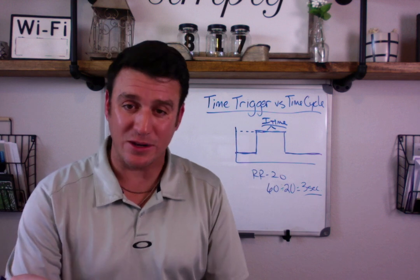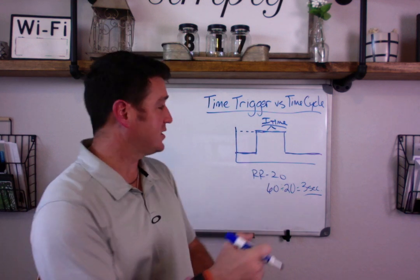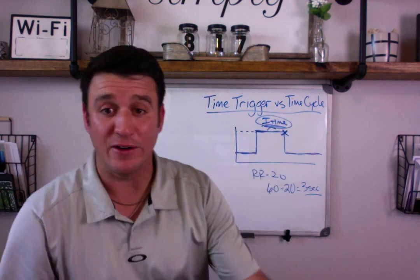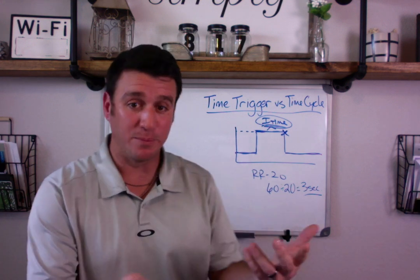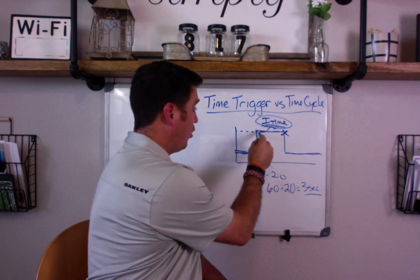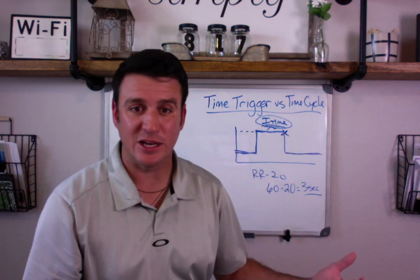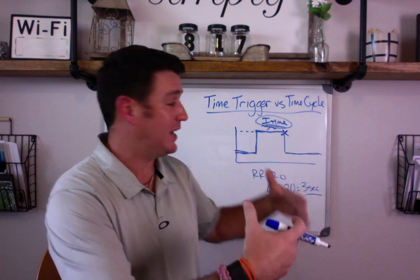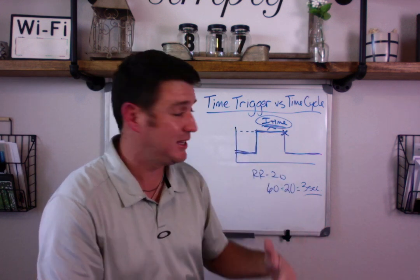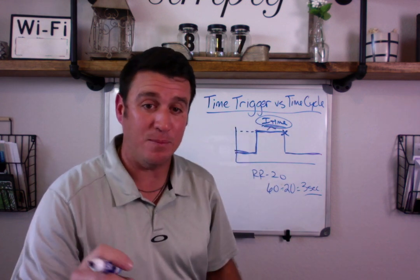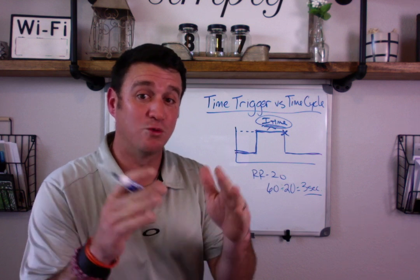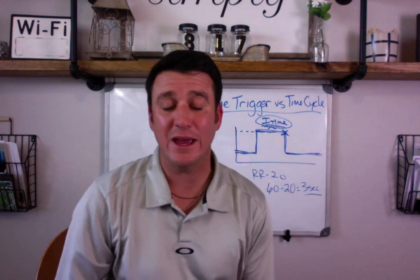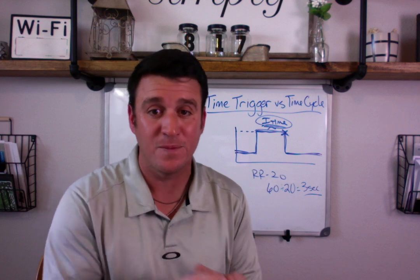When you talk about cycle, you have to understand that what turns the breath off is your set I-time. In pressure control, you set an I-time. The vent is going to give a breath, increase the pressure, and hold it for however long the I-time is set — one second, point eight seconds, two seconds. At the point in time when the I-time has been reached, the vent cuts off and exhalation begins. That's the way time is both a trigger and a cycle.